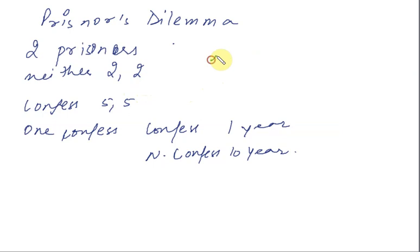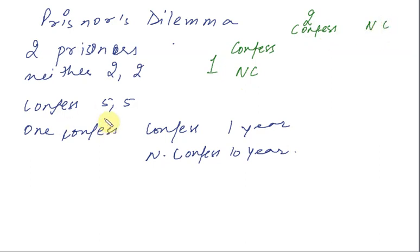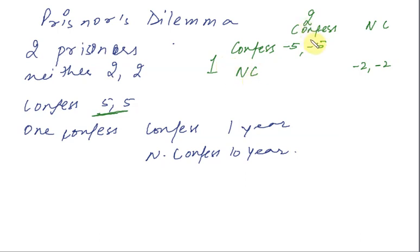We have prisoner 1 and prisoner 2. Each has the option of confessing or not confessing. When both confess, they each get 5 years — so minus 5 (negative because it's jail time). When both don't confess, they both get 2 years — minus 2 each. When prisoner 1 doesn't confess but prisoner 2 does, prisoner 1 gets 10 years and prisoner 2 gets 1 year. When prisoner 1 confesses and prisoner 2 doesn't, prisoner 1 gets 1 year and prisoner 2 gets 10 years.